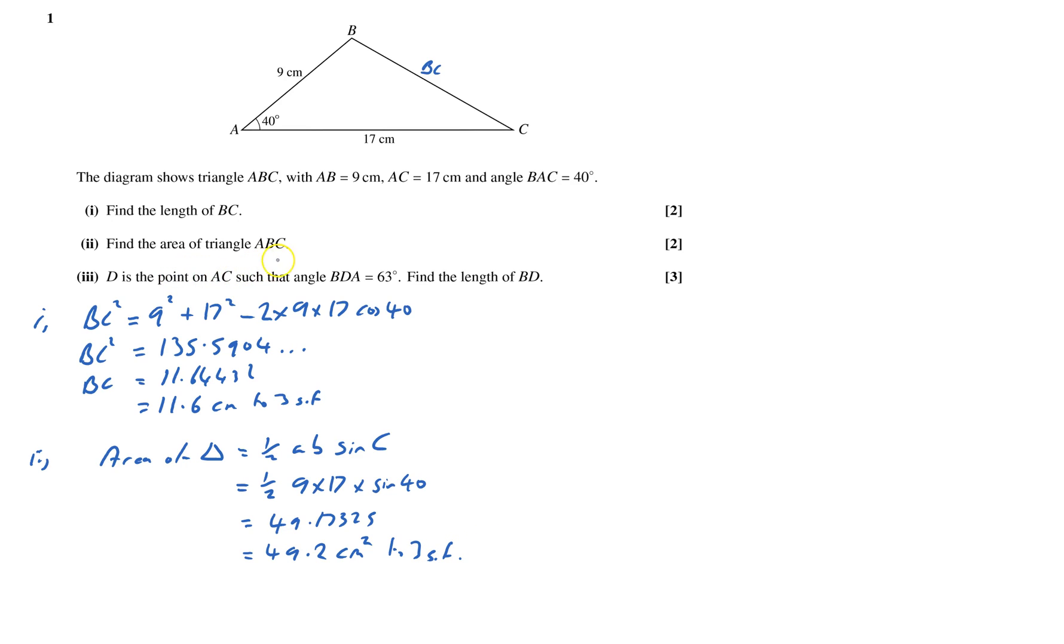Point D. It's on the line AC. So D is somewhere along this line AC. It's actually angle BDA is 63 degrees. So that's going to be something like this. And that angle there is 63 degrees.